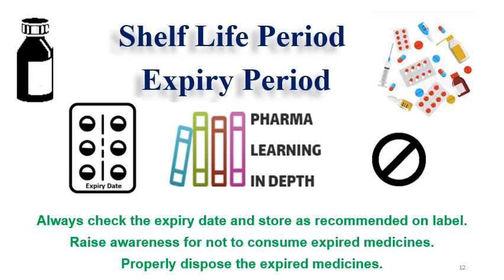In summary, shelf life period and expiry period are determined from stability studies and in-use stability studies. ICH guidelines govern the performance of stability studies and the derivation of expiry period. Thanks for watching. Please like, share, and subscribe to the Pharma Learning India channel. Take care and bye for now.